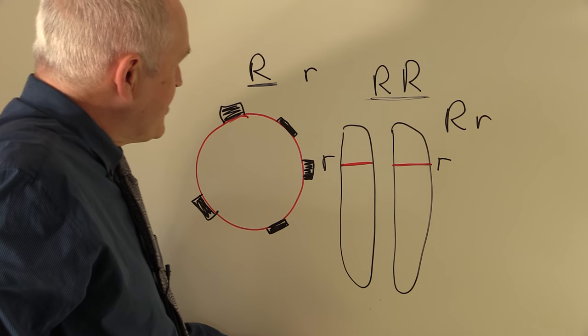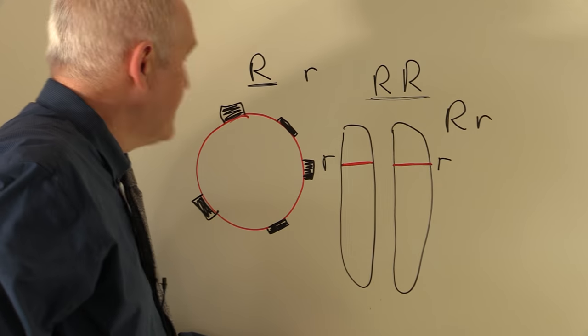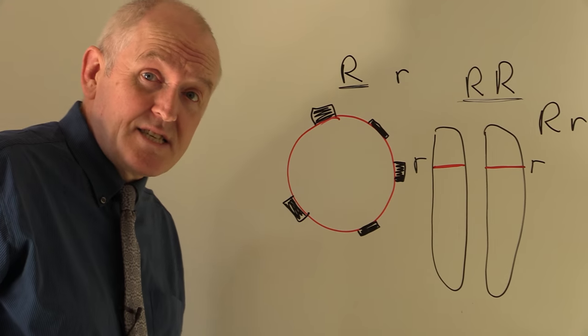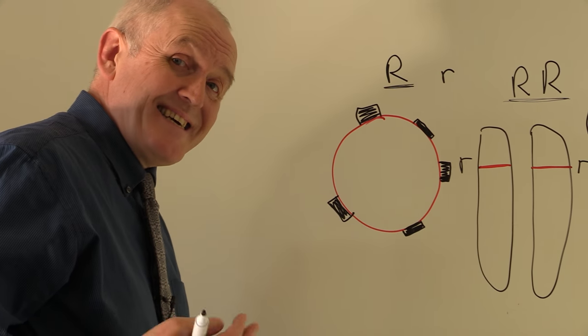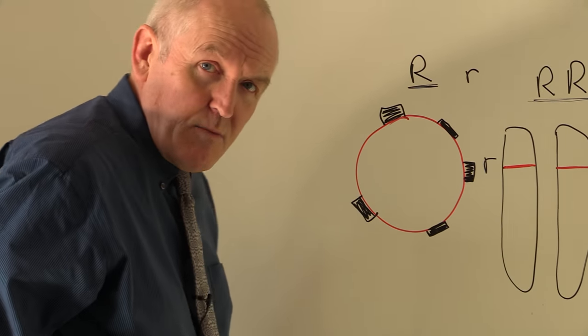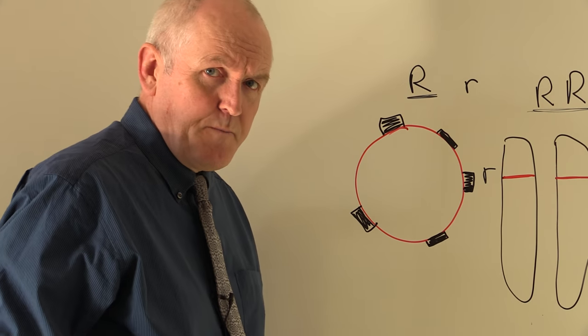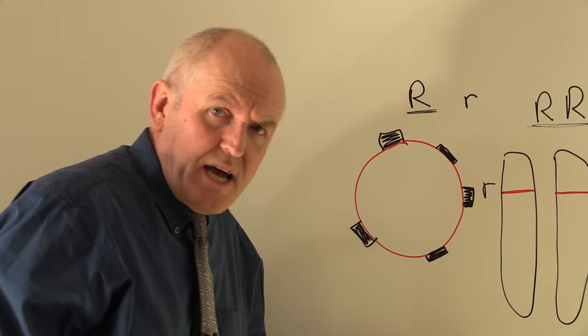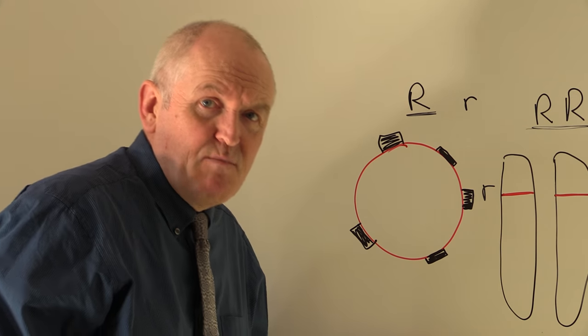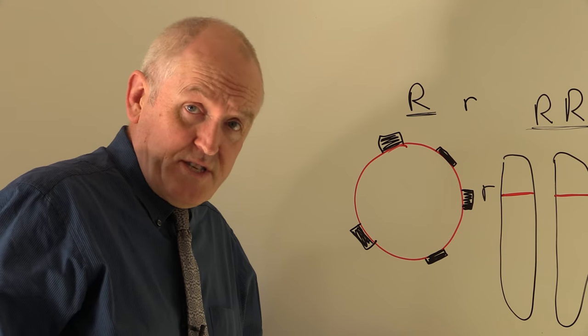So that allows us to do some genetic calculations or genetic plans to decide the probability of Rhesus factor incompatibility occurring, resulting in hemolytic disease of the newborn. Because this is only going to happen with a Rhesus negative mother and a Rhesus positive father.